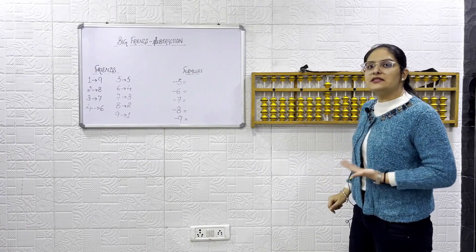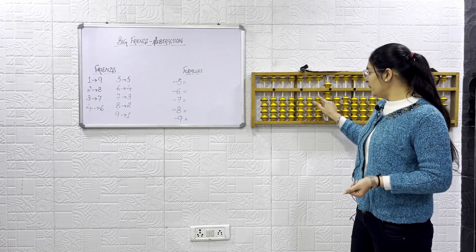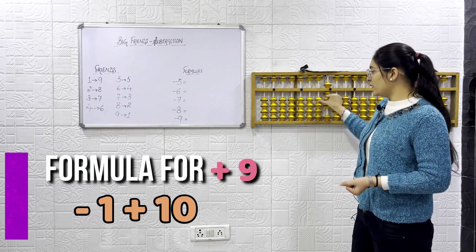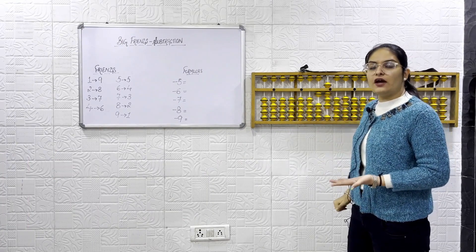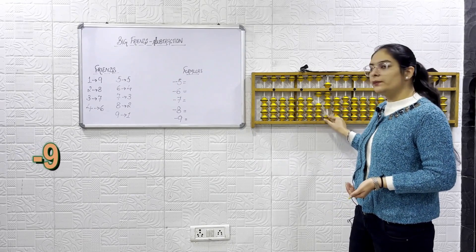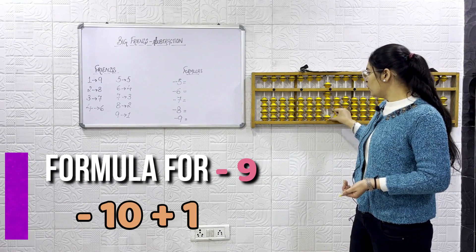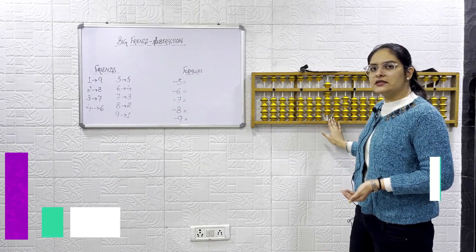Plus 9. Formula for plus 9 will be minus 1 plus 10. Now, we have to do minus 9. So, formula for minus 9 will be minus 10 plus 1. So, answer equal to this? 9.